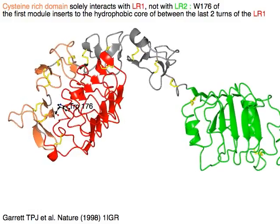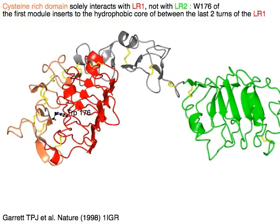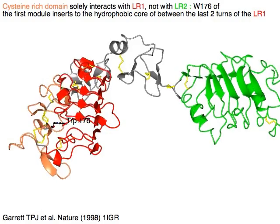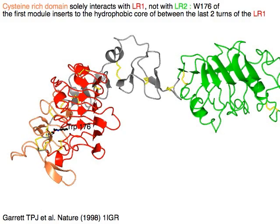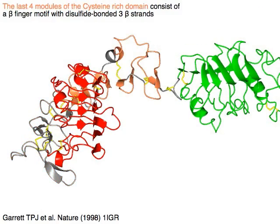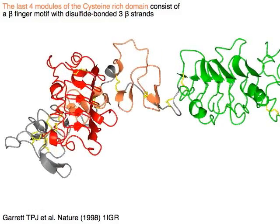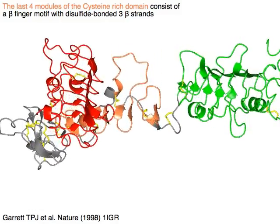Tryptophan 176 of the first module inserts into the hydrophobic core between the last two turns of LR1 in red. The last four modules of the cysteine-rich domain in orange consist of a beta finger motif with disulfide-bonded three beta strands.